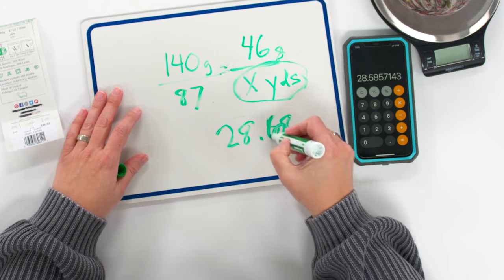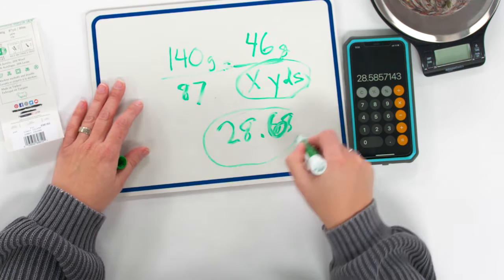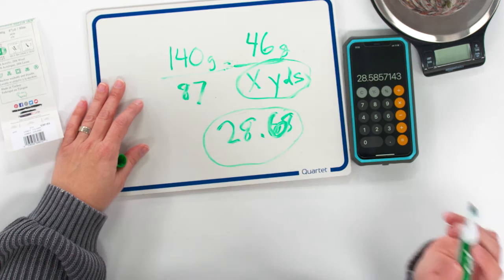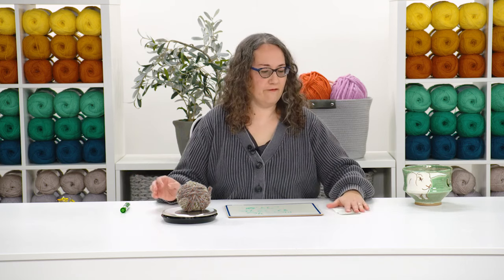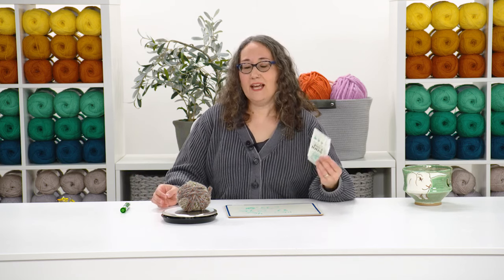It doesn't matter if you want to work in ounces, then you pay attention to the ounces on your label and put your scale in ounces. They just have to match. So I'm going to be working in grams. I'm going to weigh my ball. This weighs 46 grams, so we're going to write that down.